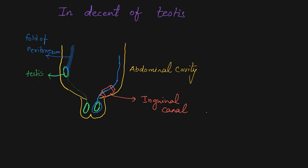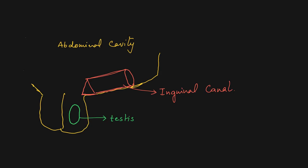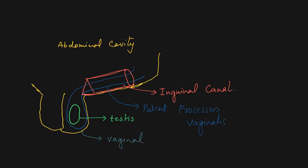Most commonly, indirect inguinal hernias are congenital. During the descent of the testes, a part of the peritoneum attached to the testes is taken to the base of the scrotum — that is known as the processus vaginalis. This processus vaginalis covers the testes and is known as the tunica vaginalis; the rest of the processus vaginalis becomes fibrous and remains in the spermatic cord. If this processus vaginalis does not become fibrous it remains patent, and according to the level at which it remains patent it is classified into vaginal, funicular, infantile, and interstitial types.